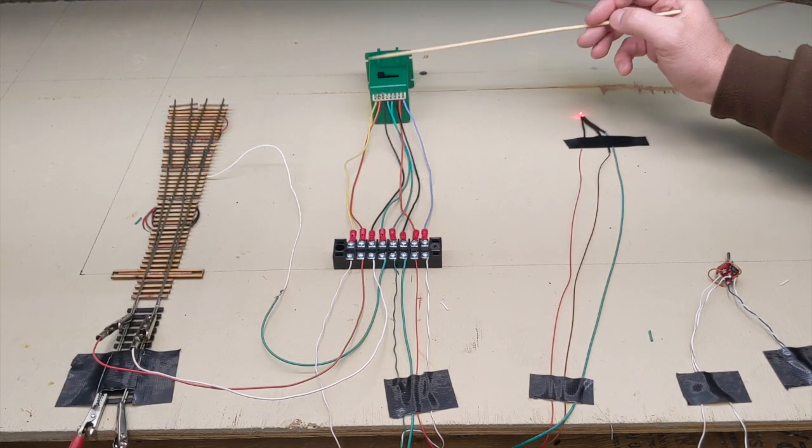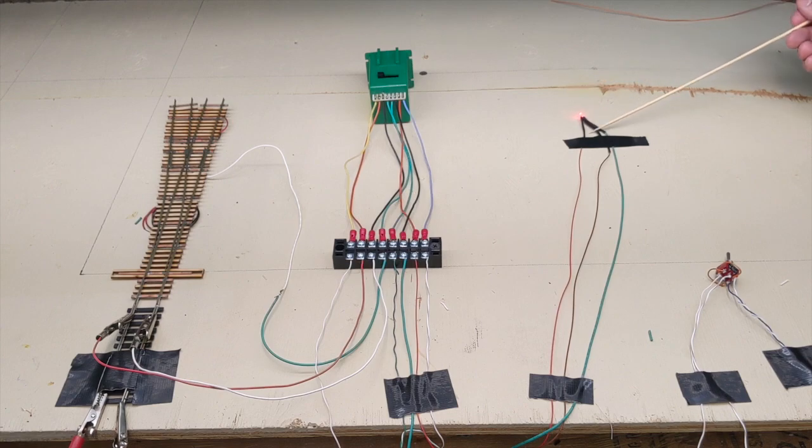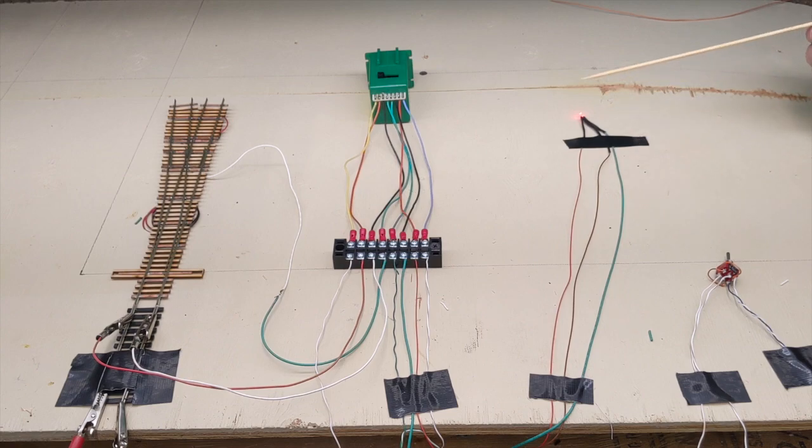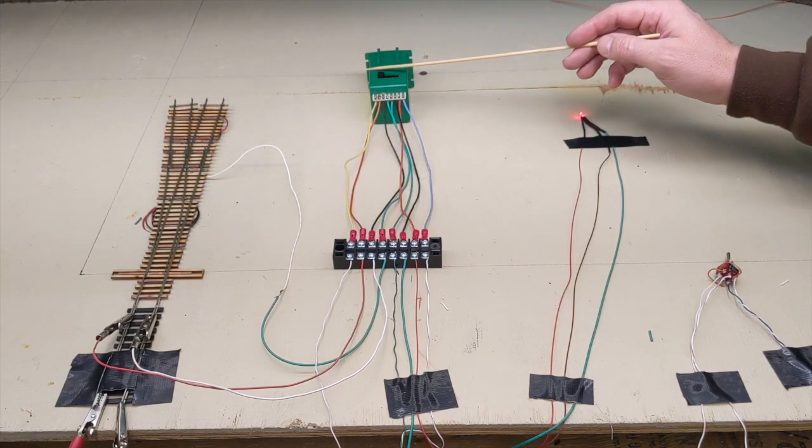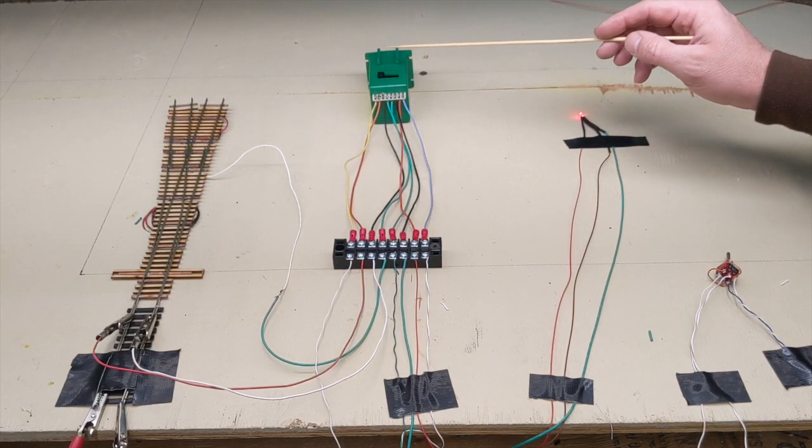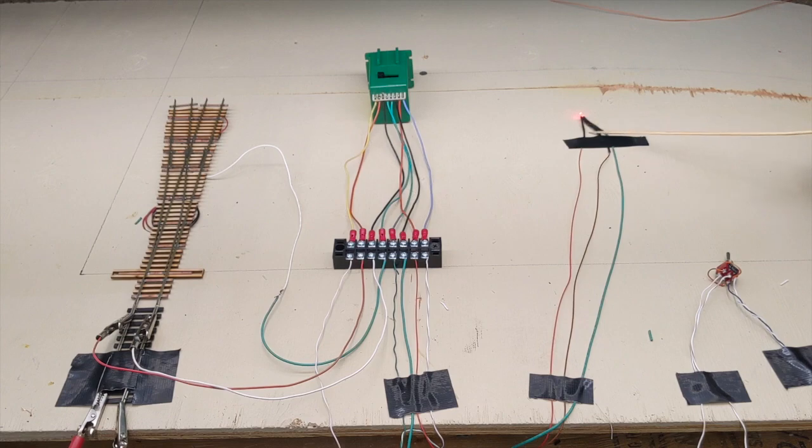I have a turnout here, my tortoise switch, my bi-color LED, and my double pole double throw. I looked online and I found a lot of videos on how to hook up the turnout to the tortoise switch, but not so many going from a tortoise switch to the LED.